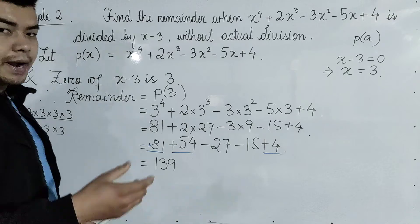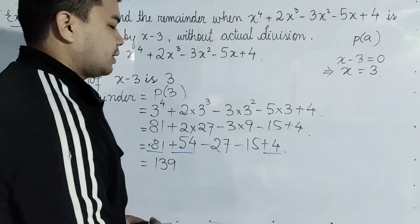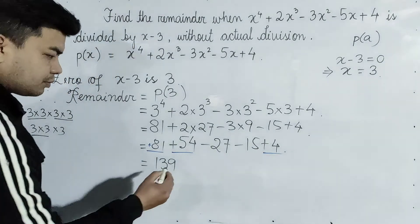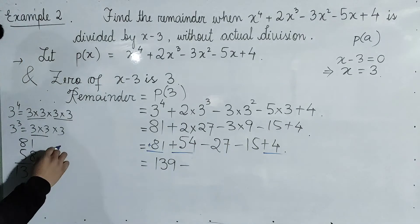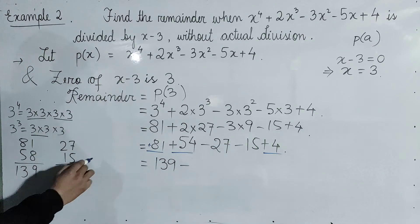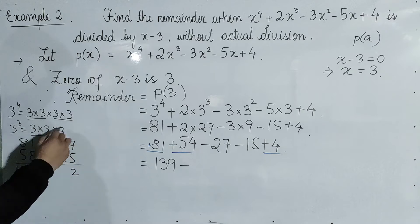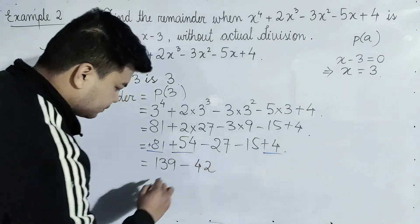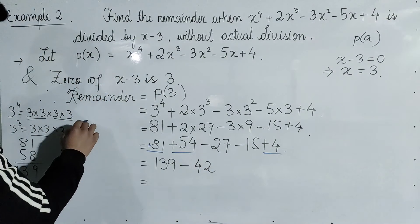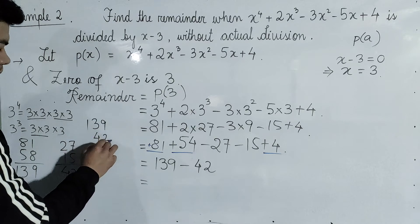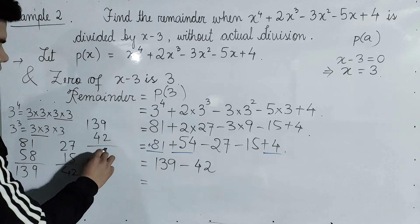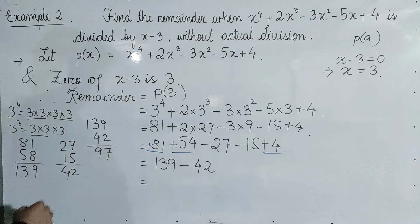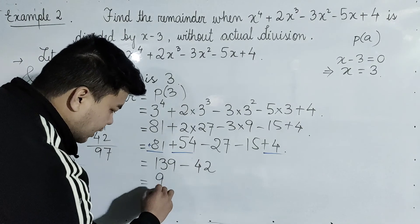Now checking the signs: minus, minus, plus. So 27 and 15 — 27 minus 15 is 12. Continuing the arithmetic: 81 plus 54 is 135, then 135 plus 4 is 139, then 139 minus 27 minus 15... working through: the result is 97.